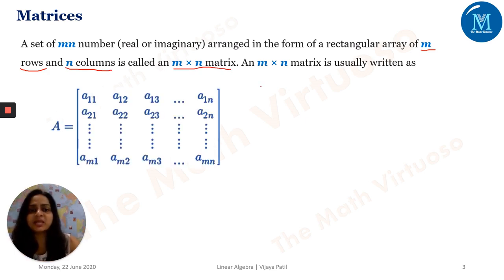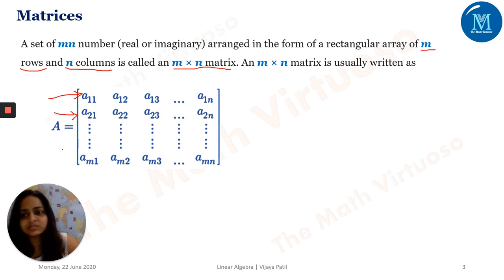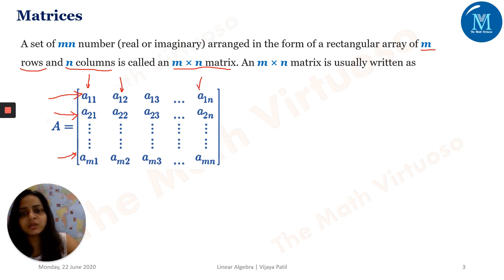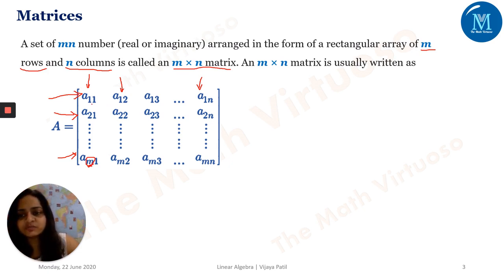This M cross N matrix is usually written as shown here. Rows are horizontal lines and columns are vertical arrangements. So how many rows and columns do we have here? We have M number of rows — 1, 2, 3, up to M — and N number of columns. Columns will always be the second element in the order notation.